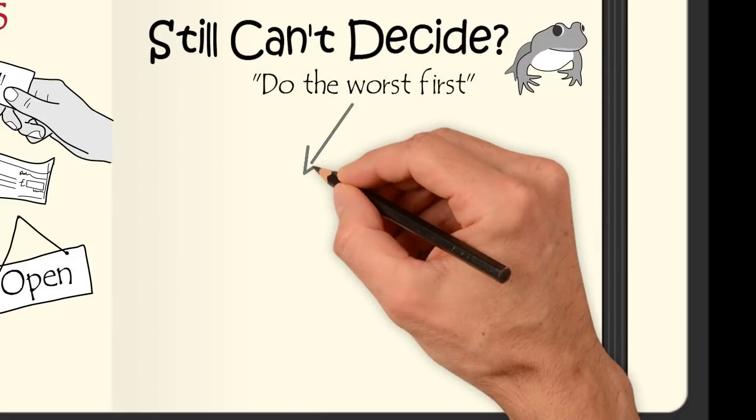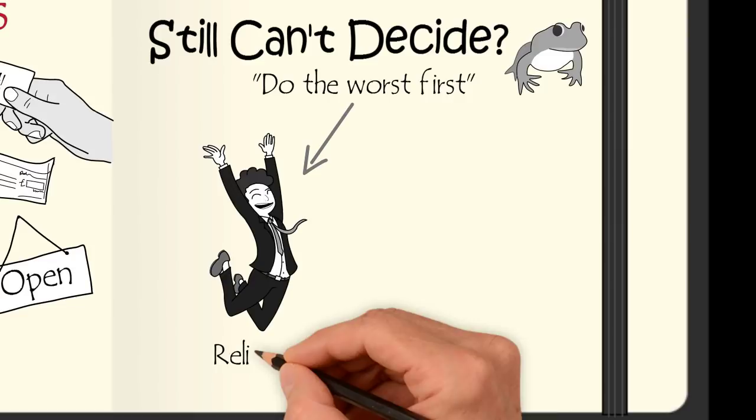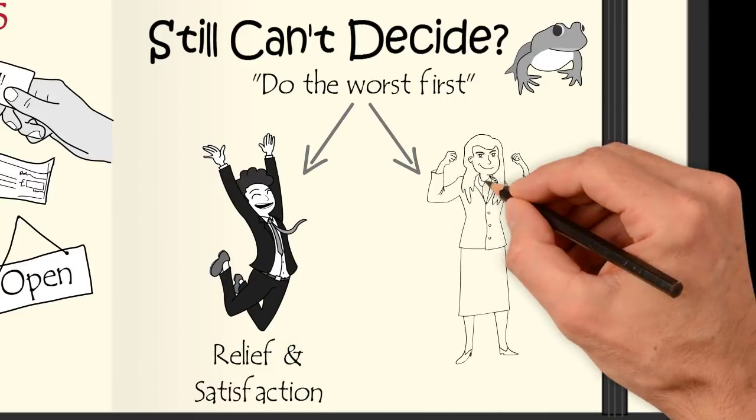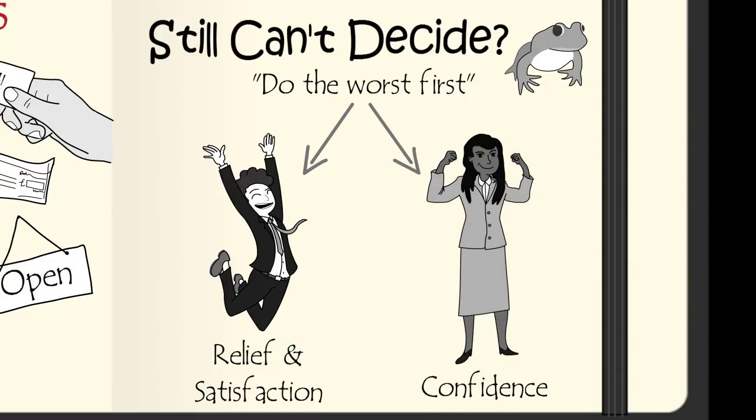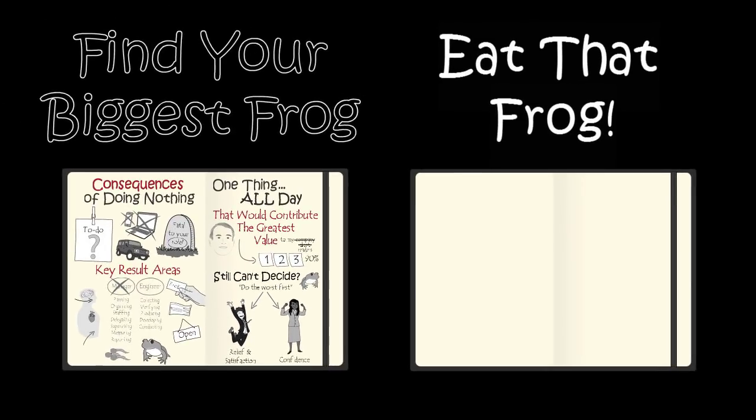By doing the worst first, you'll receive a great sense of relief and satisfaction upon completing it, which will provide you with the confidence you need to eat more frogs. So now that you've found your biggest and ugliest frog, how do you eat that frog?